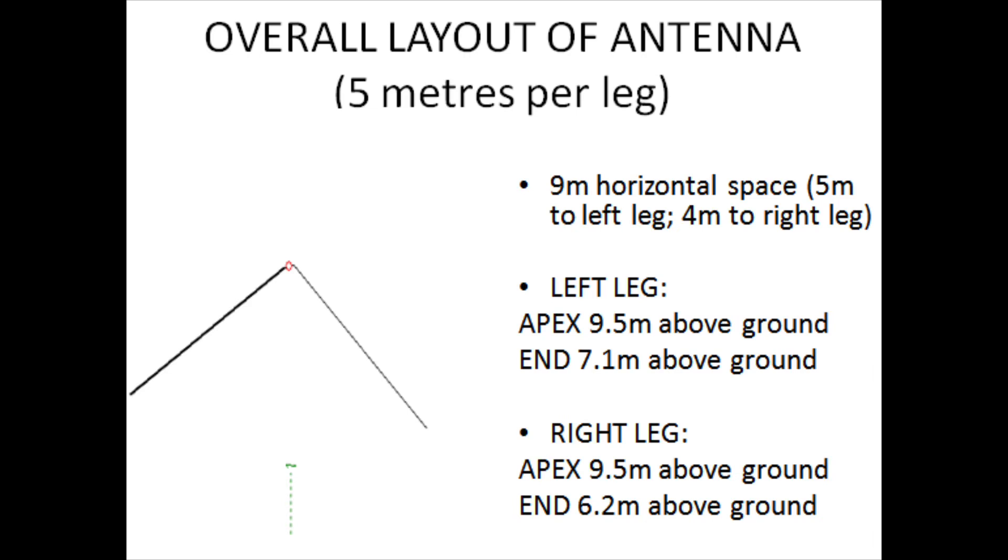So the apex of the antenna, the very top near the top of the middle pole is 9.5 meters. The end of the left hand leg is just over 7 meters above ground, just over 23 feet. And for the right hand leg, it's about 6.2 meters above ground which is a little over 19 getting on for 20 feet.